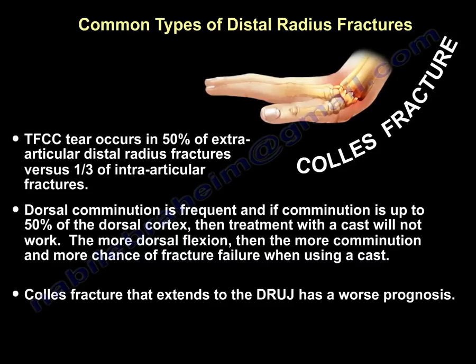The more dorsal comminution and the more dorsal flexion of the fragment, the more chance that the fracture will not be treated adequately with a cast and there will be failure of cast treatment. A Colles fracture that extends to the DRUJ has the worst prognosis.